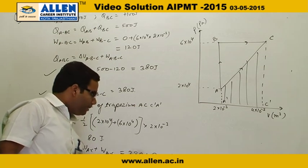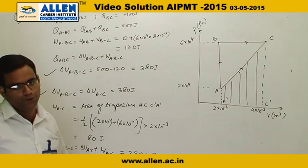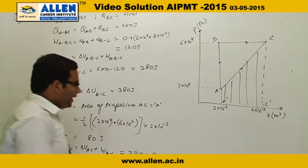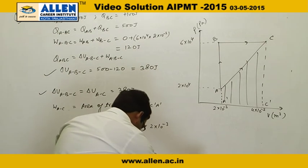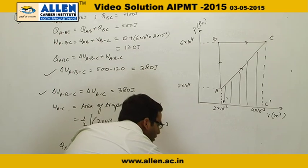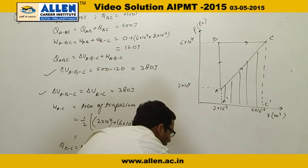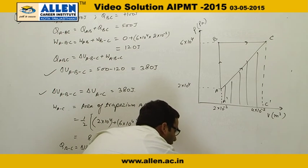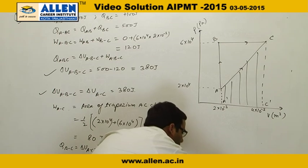The sum total gives QAC equal to 460 joules. So the correct answer is the second option, 460 joules.